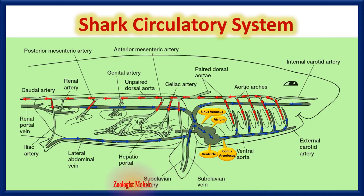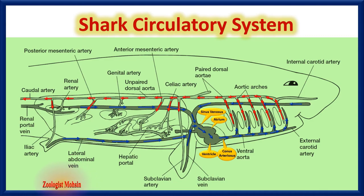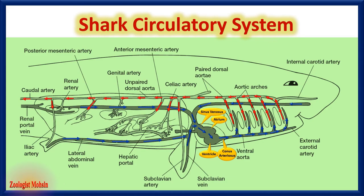After passing through systemic capillaries, the blood becomes deoxygenated, and veins again collect it and send it to the sinus venosus — and the cycle begins again. Blood moves in one circuit, so it is single circuit circulation. That covers sharks or Chondrichthyes.